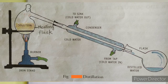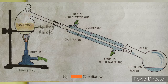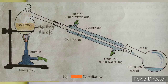You can see the figure showing the setup for the process of distillation. There is an iron stand, a burner, and the iron stand is holding the flask which contains the solution — the heating flask. The flask is then connected to a long pipe which passes through a condenser supplying cold water, and it is then connected to a flask which collects the distilled water.